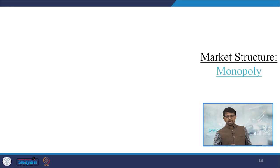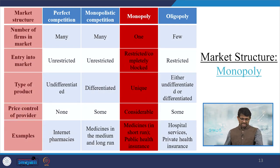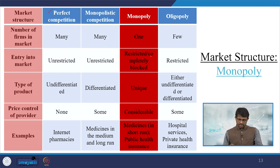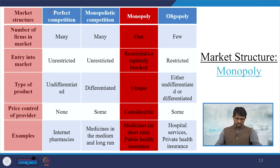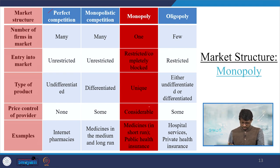Now discussing monopoly market features: single seller, completely blocked entry and exit, unique product type, and considerable price control resting with the single seller. Examples include government monopoly, medicines in the short run, and public health insurance.